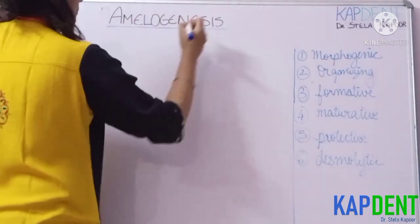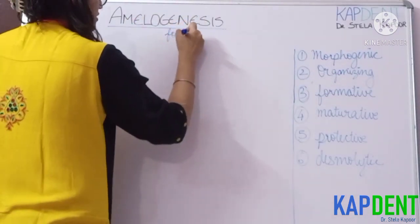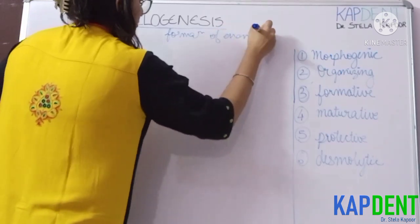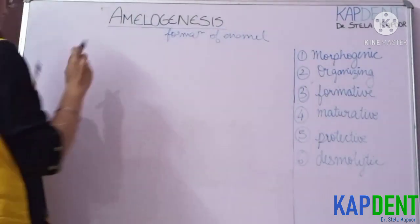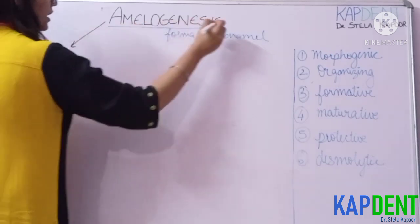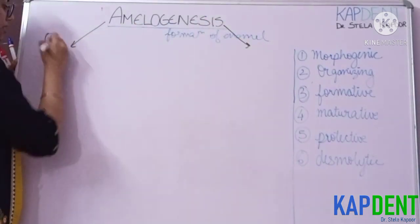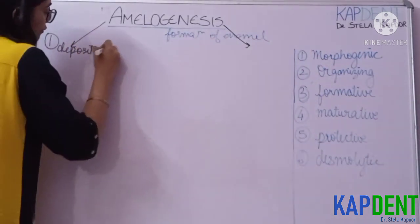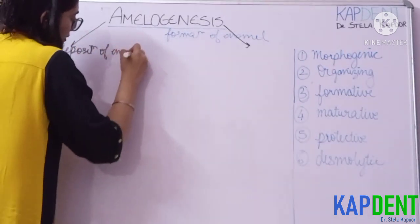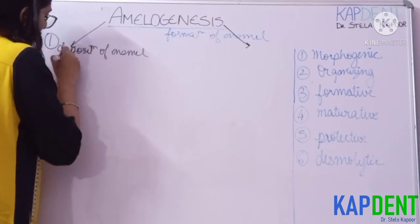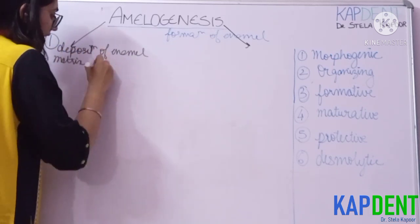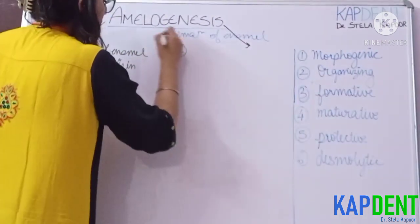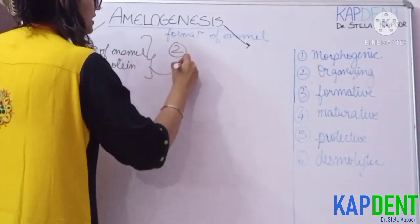As the name suggests, amelogenesis is basically the formation of enamel. This process is divided into two steps mainly: number one, the deposition of your enamel matrix proteins, which is basically the organic component, and second is the mineralization of this matrix.